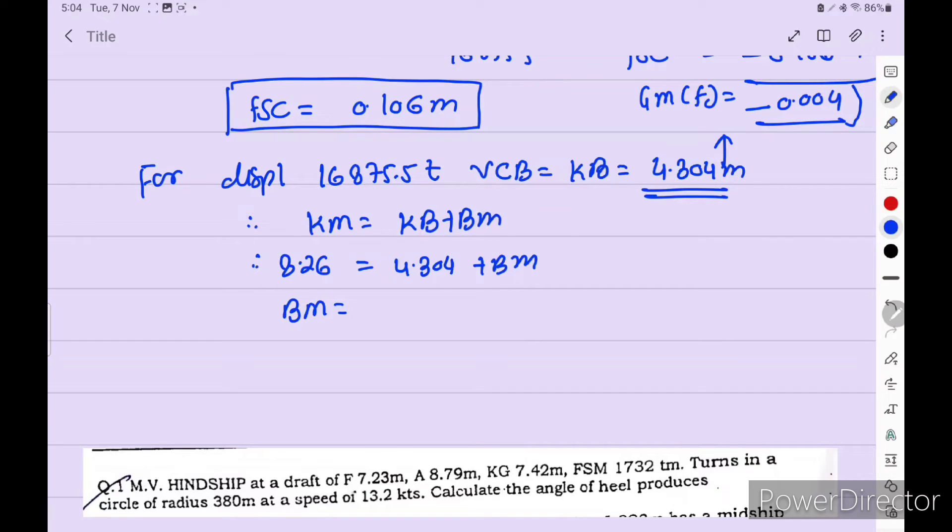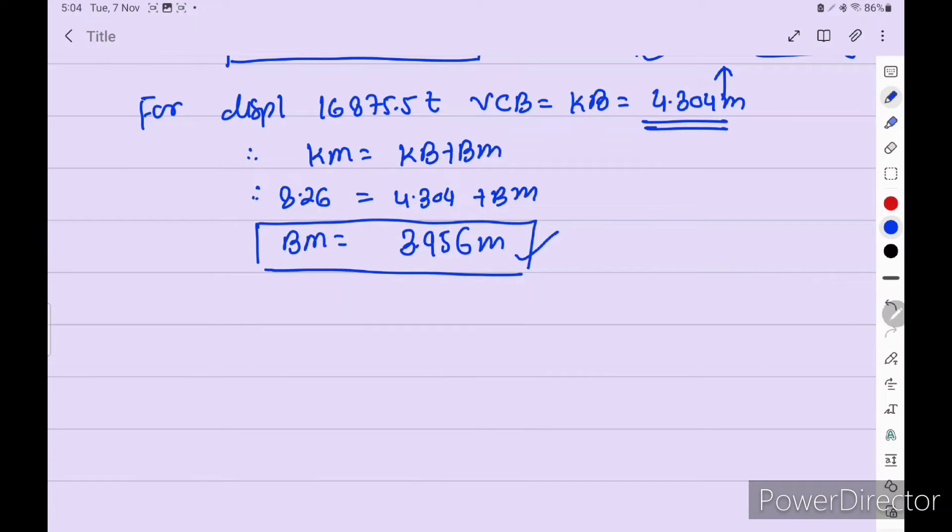So BM is equal to, this side will go, it's minus. So 3.956 meter. Now we have GM and we have the BM. So we can find out angle of loll. Okay. So angle of loll formula is angle of loll is equal to tan theta.